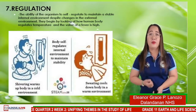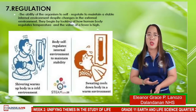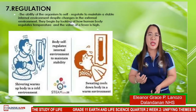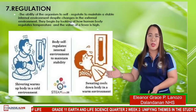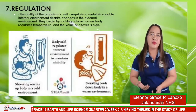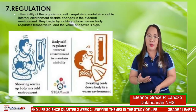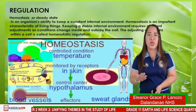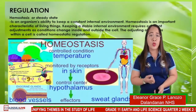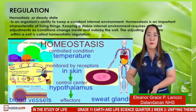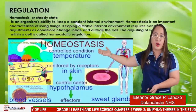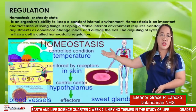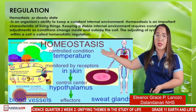For number seven, regulation. Regulation is the ability of organisms to self-regulate — to maintain a stable internal environment despite changes in the external environment. We also have homeostasis, or steady state: an organism's ability to keep a constant internal environment. Homeostasis is an important characteristic of all living things. Keeping a stable internal environment requires constant adjustment as conditions change outside the cell, adjusting systems within the cell — this is called homeostatic regulation.